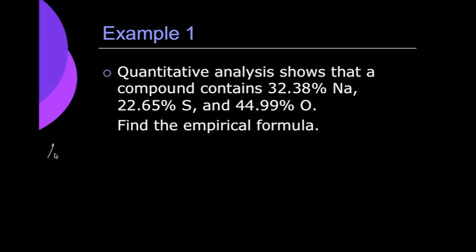So to do that, we have sodium, and we have sulfur, and we have oxygen. Now, to convert it to grams, all we do is we take that percent sign, erase it, and just put grams. So we're going to have 32.38 grams, we're going to have 22.65 grams, and we're going to have 44.99 grams. And that's sodium, sulfur, and oxygen.